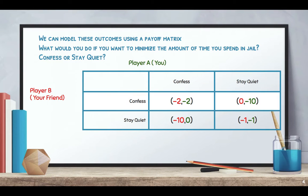We can model this using something called the payoff matrix. What we want to know is: what would we do if we want to minimize the amount of time we're going to spend in jail? Confess or stay quiet? That is the question.